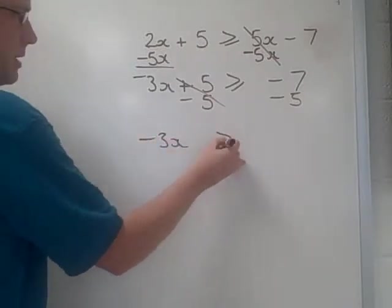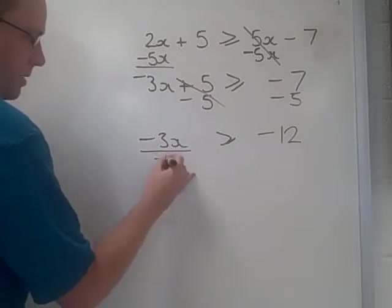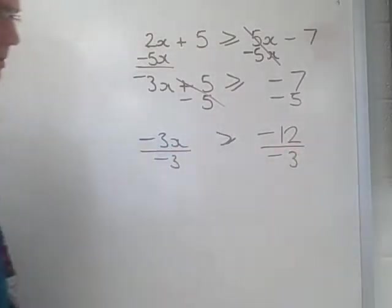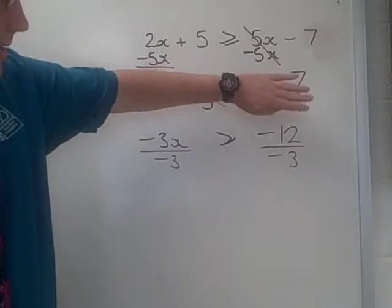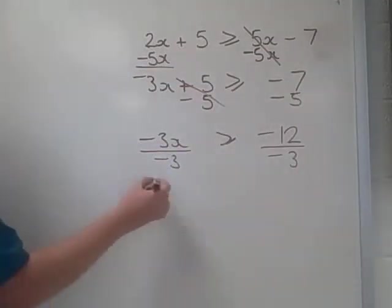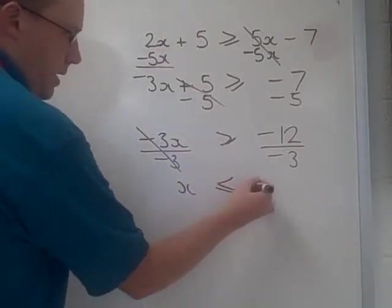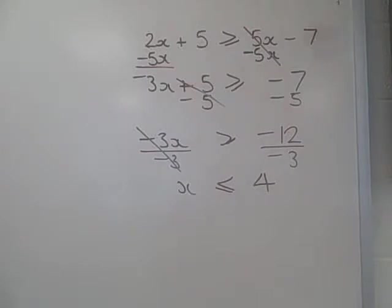So, we've got negative 3x is greater than negative 12. Now, this time I'm going to divide by negative 3. So, it doesn't actually matter if this is positive or negative. The important step here is I divide it by something that's negative. When you divide by something that's negative, you switch the inequality around. And then negative 12 divided by negative 3 is 4.